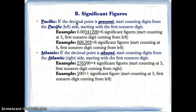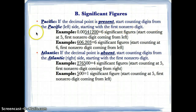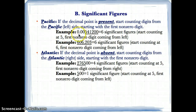Now let's briefly go over significant figures. You need to count significant figures depending on whether the decimal point is absent or present. Starting with P for Pacific: if the decimal point is present, you start counting digits from the Pacific or left side, beginning with the first non-zero digit.